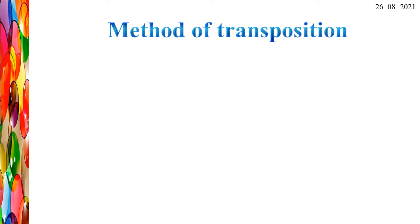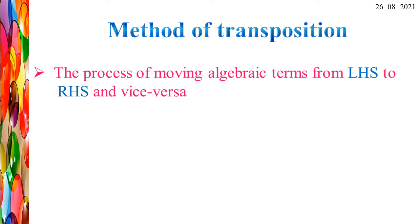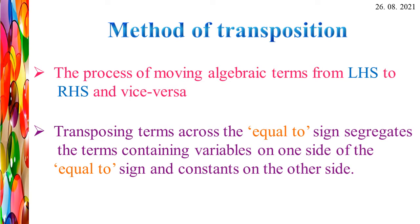Let's see the method of transposition. Transposition means we are going to shift the position of a term from one side to the other, or we need to separate variable and constant terms. The process of moving algebraic terms from LHS to RHS and vice versa segregates the terms containing variables on one side of the equal to sign and constants on the other side.